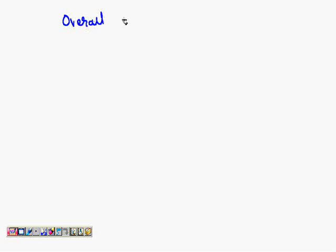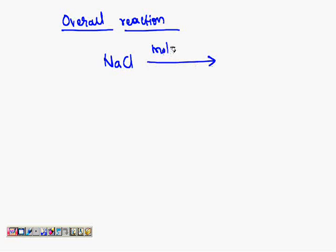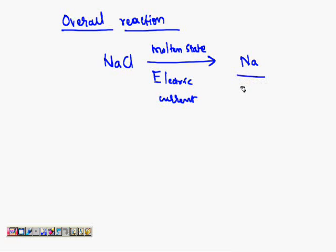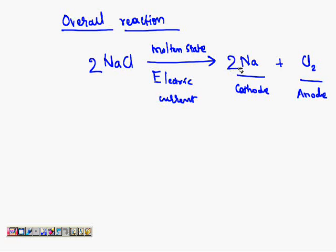The overall reaction for electrolysis: NaCl in the molten state, with electric current passed, gives sodium deposited at the cathode and chlorine gas liberated at the anode. You can balance the equation — since Cl₂ requires two Cl atoms, you can balance accordingly.